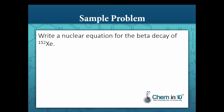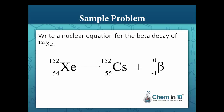Sample problem: Write a nuclear equation for the beta decay of xenon-152. In beta decay, a beta particle is emitted from the nucleus, written with a mass number of 0 and an atomic number of negative 1. The atomic number of our unknown nuclide is 55, because 55 plus negative 1 equals 54. The mass number is 152, because 152 plus 0 equals 152. Looking on the periodic table, our unknown nuclide is cesium.